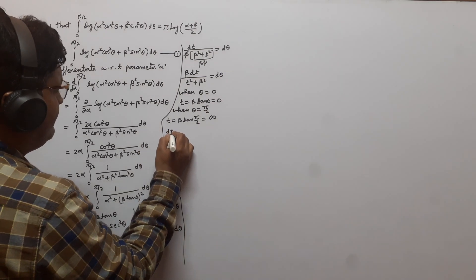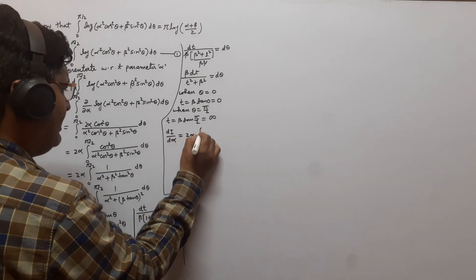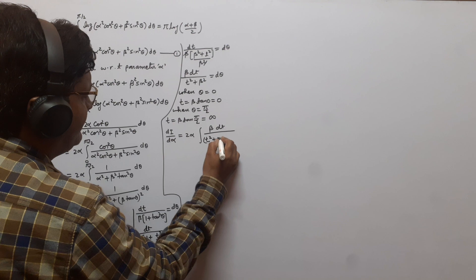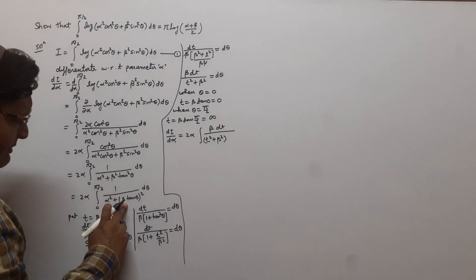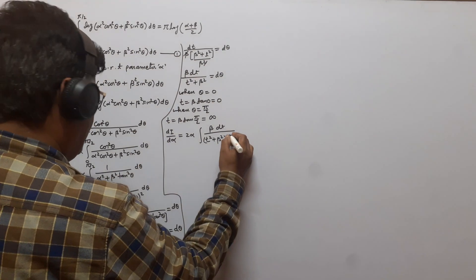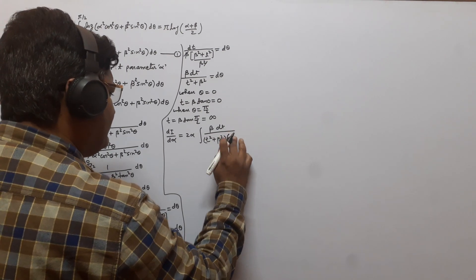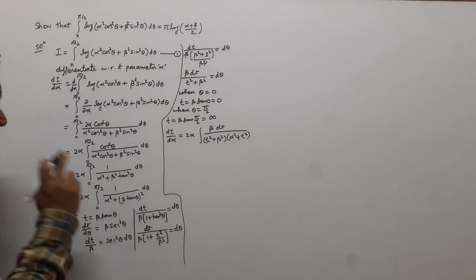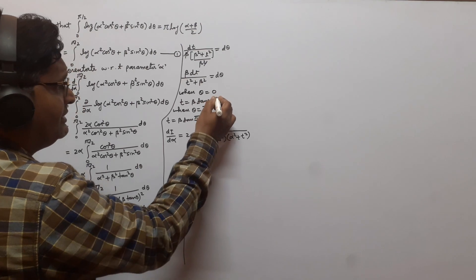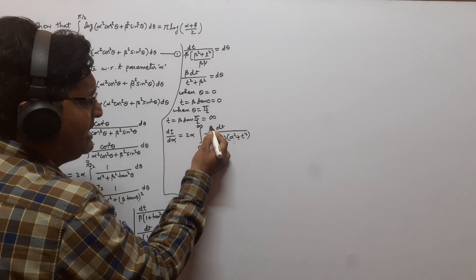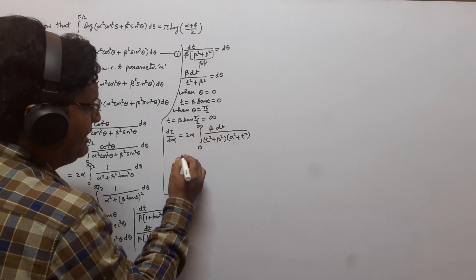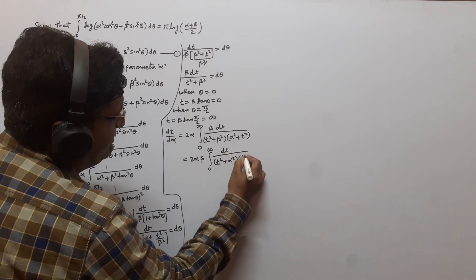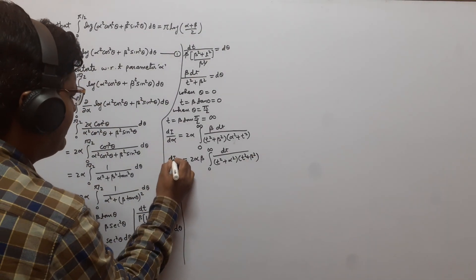The given integral dI/dα equals 2α times the integral, and in place of dθ we put β·dt/(t² + β²), and in place of β·tanθ we put t, giving α² + t² in the denominator. Since β is constant with respect to t, we take it outside: dI/dα = 2αβ·∫₀^∞ dt/[(t² + α²)(t² + β²)].